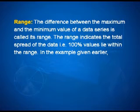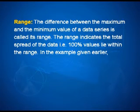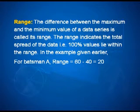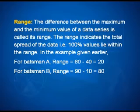Let us first discuss range. The difference between the maximum and the minimum value of a data series is called its range. The range indicates the total spread of the data — that is, 100% of values lie within the range. In the earlier example, for batsman A, range = 60 − 40 = 20. For batsman B, range = 90 − 10 = 80. Thus, range = maximum value − minimum value. The range gives us a rough idea of variability but does not tell about the dispersion from a measure of central tendency.